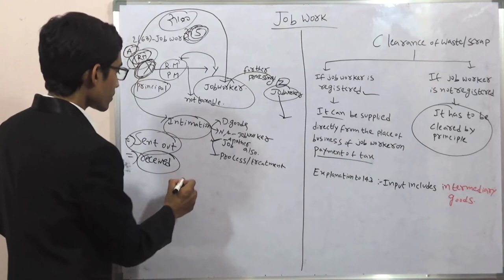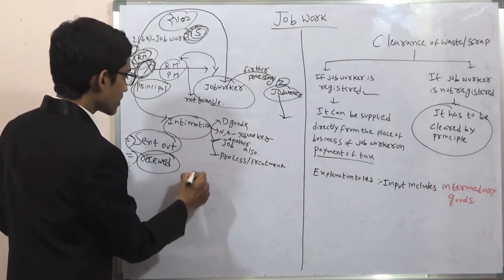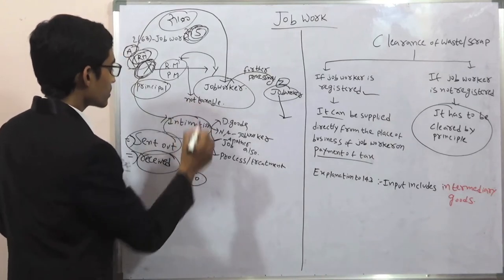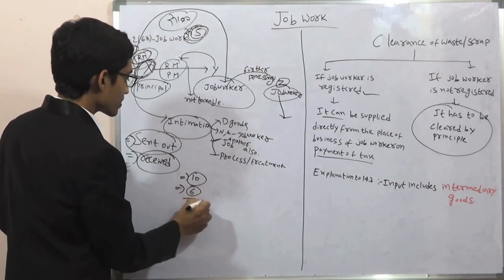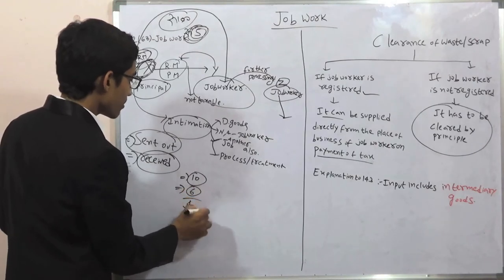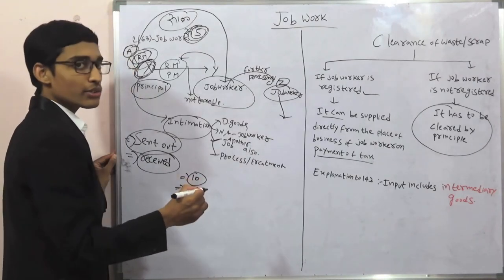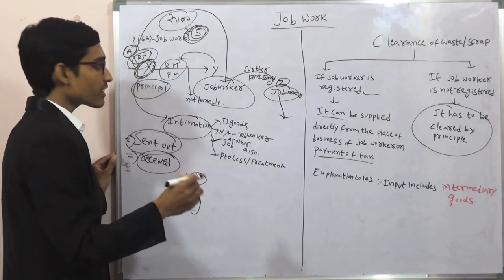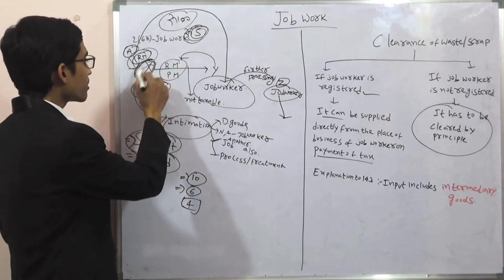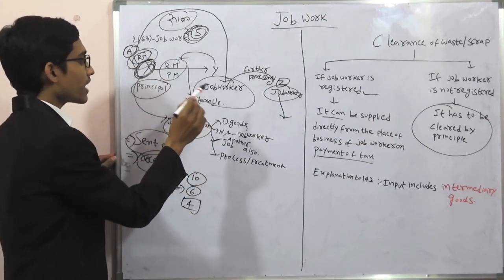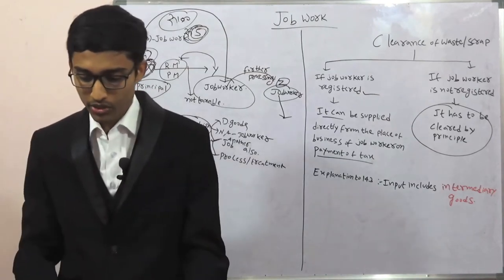For example, if 10 goods are sent to the job worker and 6 are used in the process, there will be a balance of 4 goods. This is done to ensure there is no diversion of material sent by the principal and that they are used for the purpose of job work.